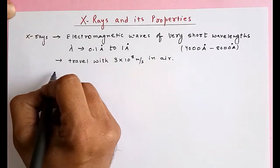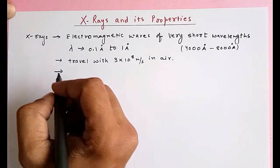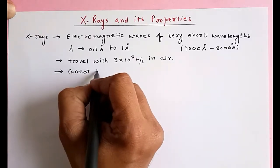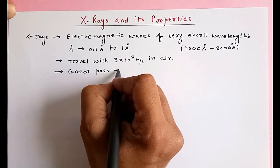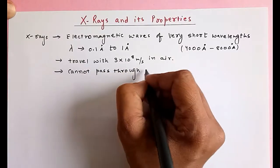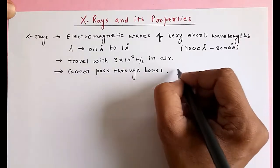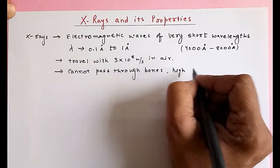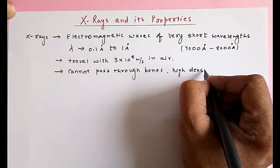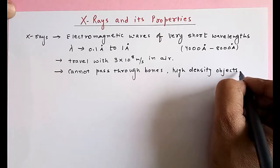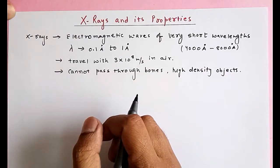X-rays cannot pass through bones or high density objects because they get absorbed inside the substance.